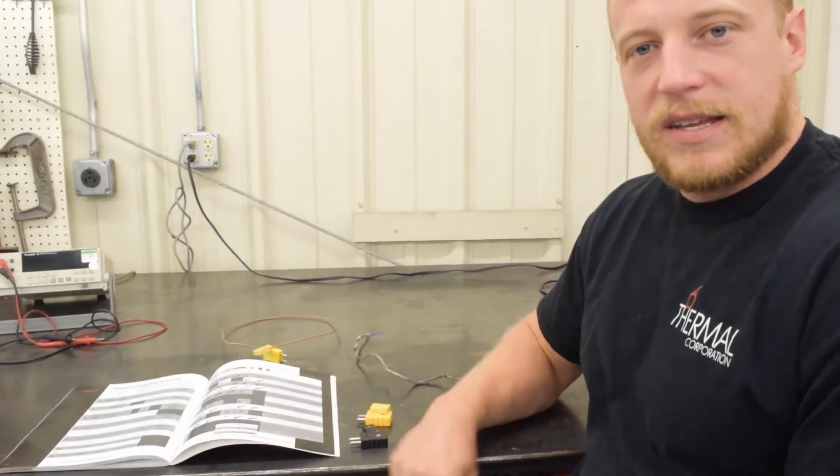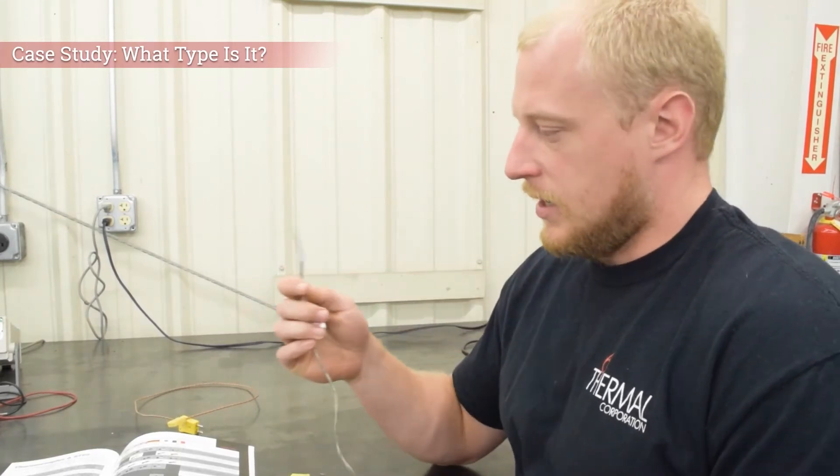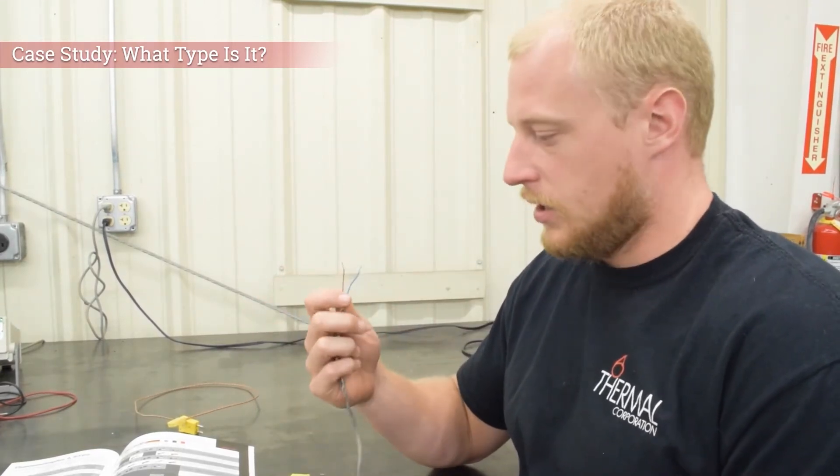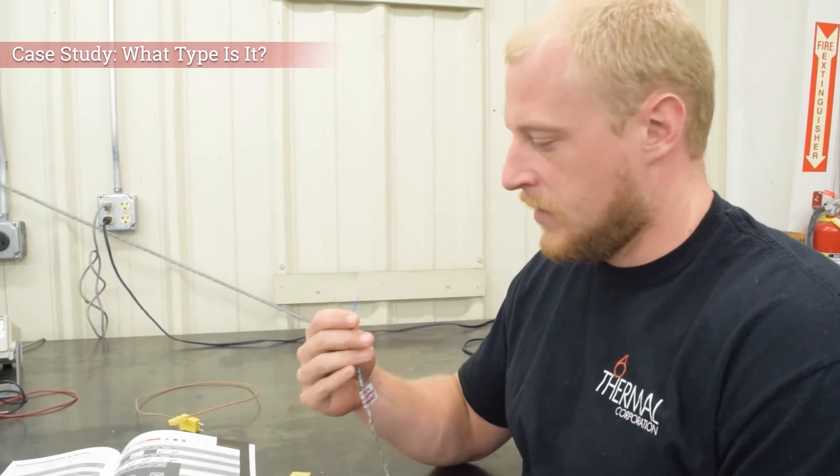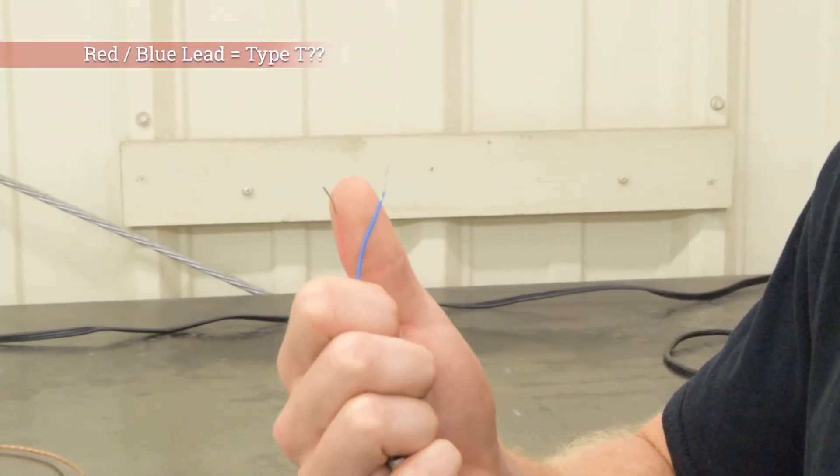Now let's look at a case study of a thermocouple that I brought back from a customer's plant a couple weeks ago. They had this thermocouple and it was no good and they didn't know what type it was. So when you look at it, it's got a red and blue lead which would seem to indicate type T from our discussion that we just had.